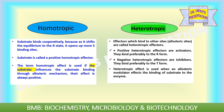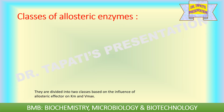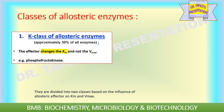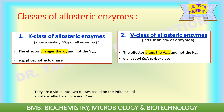The heterotropic effect is used when an allosteric modulator affects the binding of substrate to the enzyme. Allosteric enzymes are divided into two classes: K class and V class. K class allosteric enzymes make up approximately 30% of all allosteric enzymes, whereas less than 1% of enzymes fall under the V class. In the K class, the effector changes the Km but not the Vmax — an example is phosphofructokinase. In the V class, the effector alters the Vmax but not the Km — an example is acetyl-CoA carboxylase.